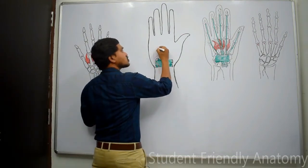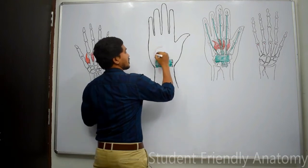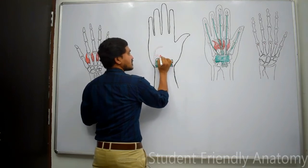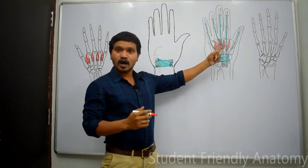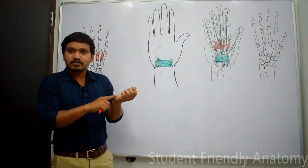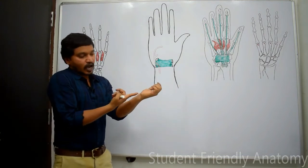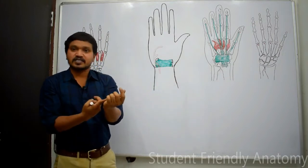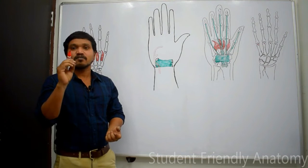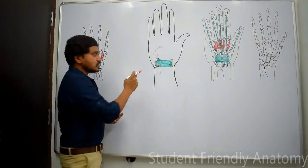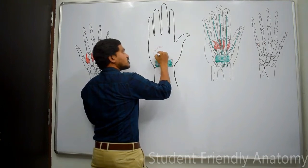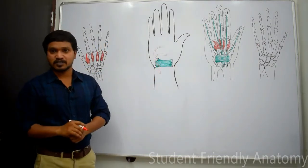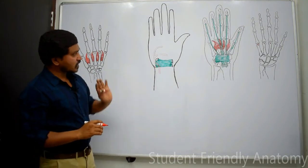The deep branch passes deep to the long flexor retinaculum, passing in between the abductor digiti minimi and flexor digiti minimi. After entering, it gives one superficial branch that goes superficial to the long flexor retinaculum. The deep branch then anastomoses with the main continuation of the radial artery to complete the deep palmar arch.